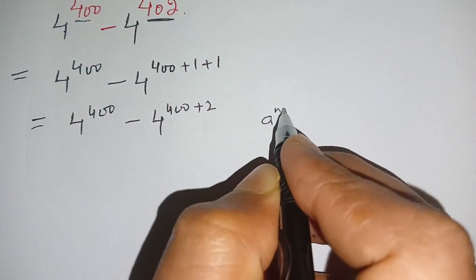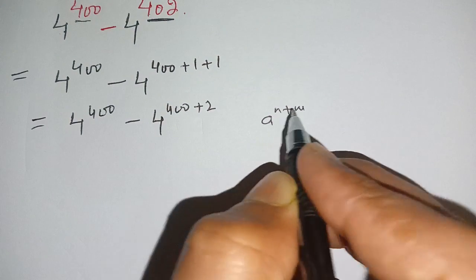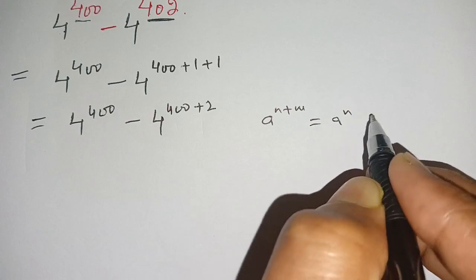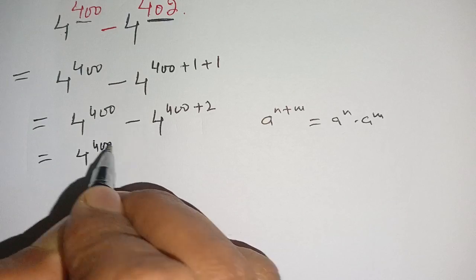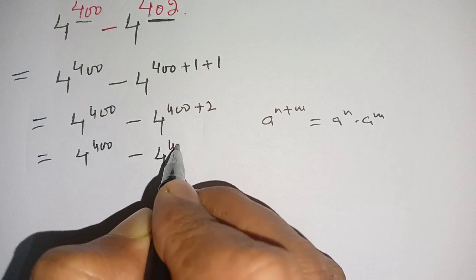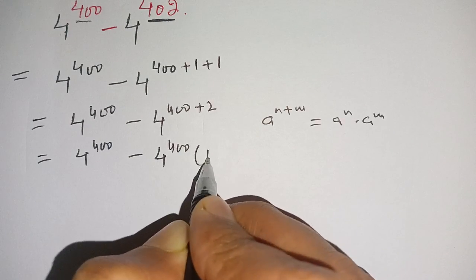We know that if a power n plus m, then a power n plus m is equal to a power n times a power m. Same case here, we get 4 power 400 minus 4 power 400 times 4 power 2.